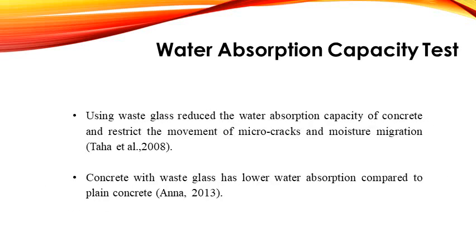Water absorption capacity test: using wasted glass reduces the water absorption capacity of concrete and restricts the movement of microcracks and moisture migration. Also, concrete with wasted glass has lower absorption compared to plain concrete.